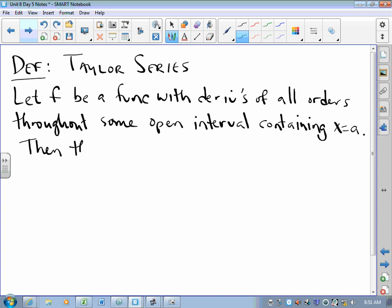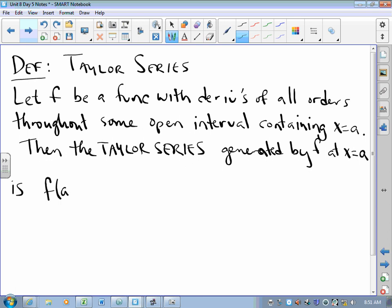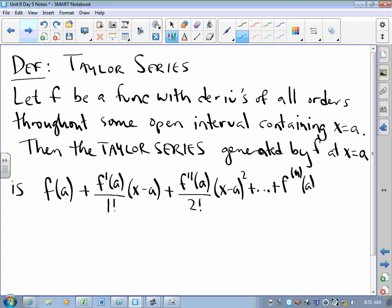Throughout some open interval containing x = a. Then, the Taylor series generated by f at x = a is: it's going to look really similar to a Maclaurin series. Function at a, derivative at a over 1 factorial times (x - a), and so on, so that the nth derivative at a over n factorial times (x - a) to the n is the nth term.